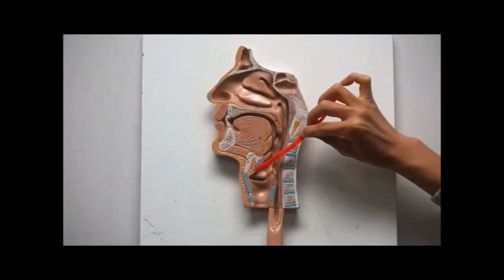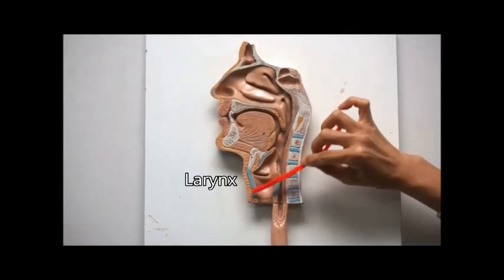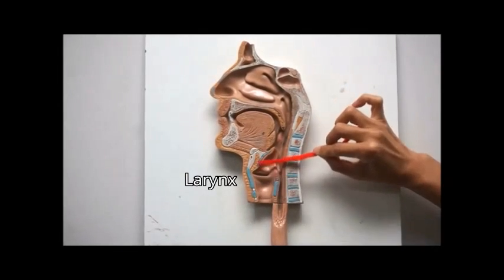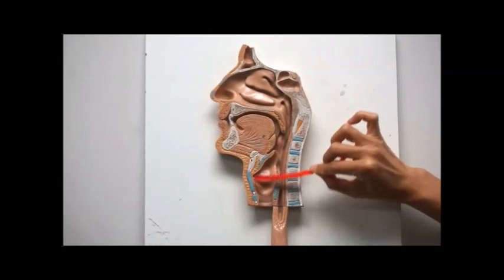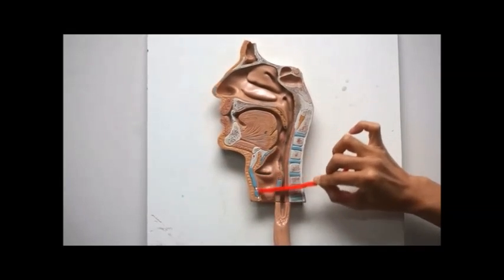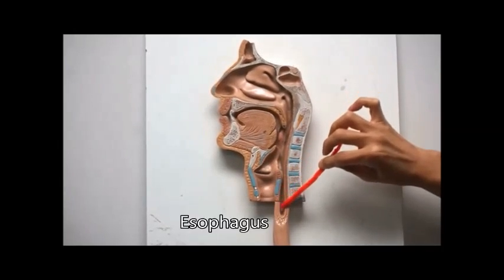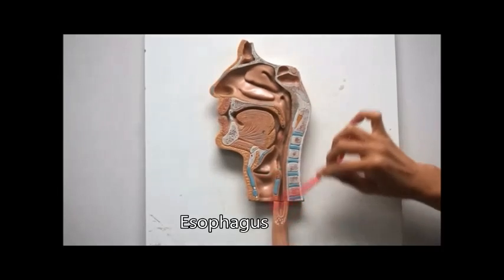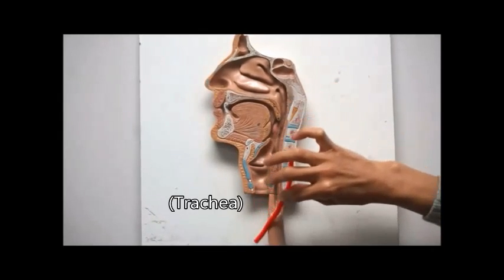The larynx is from here to here. The larynx is found anterior to the esophagus and is connected to the trachea, which is not shown.